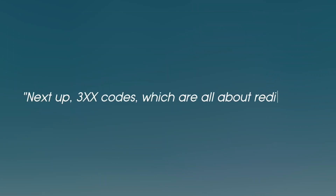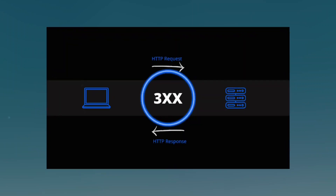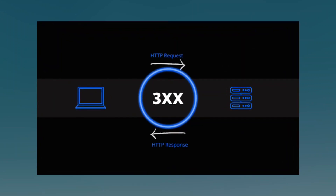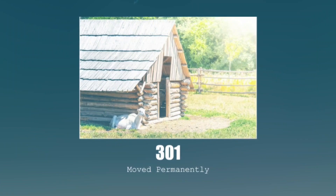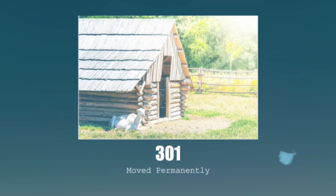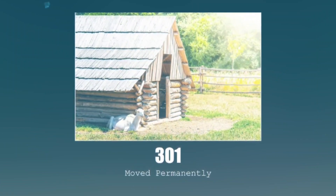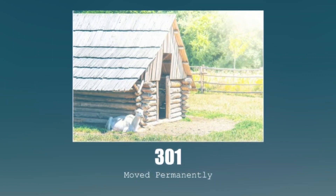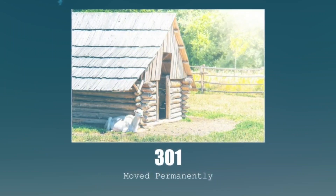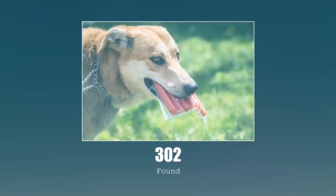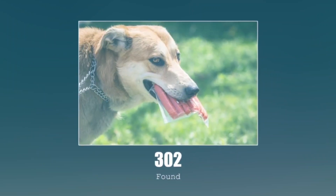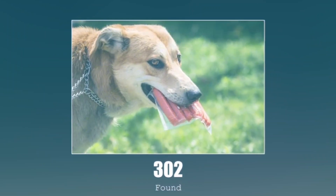Next up, 3xx codes, which are all about redirection. The server is basically saying, hey, what you're looking for is over there. 301 Moved Permanently — this means the resource you're trying to access has permanently moved to a new URL, and your browser will automatically take you to the new location. 302 Found — similar to 301, but the move is temporary. The server is like, we're here for now, but might be back later.